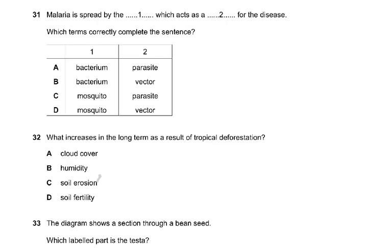Malaria is spread by the mosquito, which acts as a vector for the disease. That is why the answer is D — the mosquito is the vector.